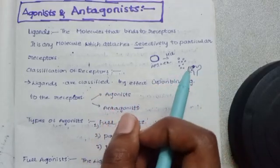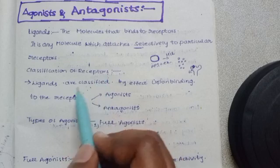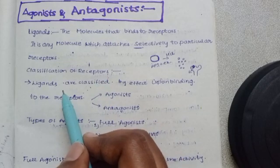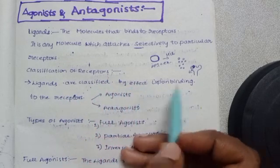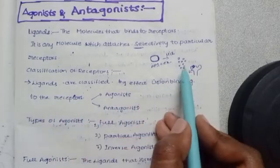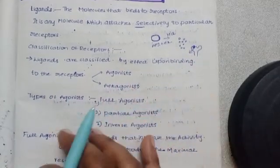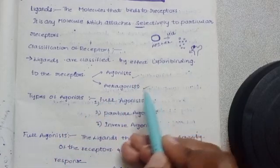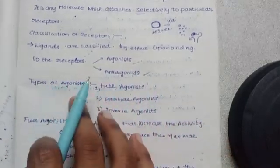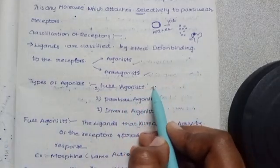Then receptor activity goes on. Classification of ligands: ligands are classified by their effect upon binding to the receptors. Ligands are divided into agonist and antagonist. Agonist types are full agonist, partial agonist, and inverse agonist.